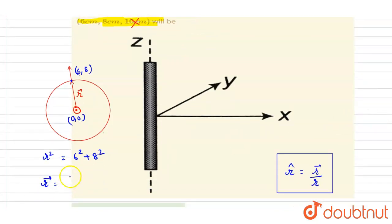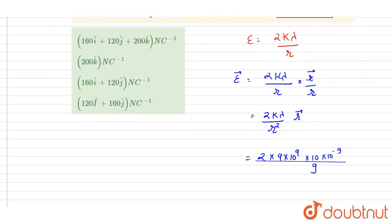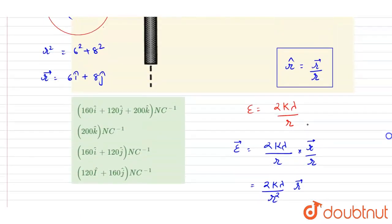...taking origin at the starting point because the wire lies on the z-axis. We are seeing the top view to get this, so we just need to put the value here.